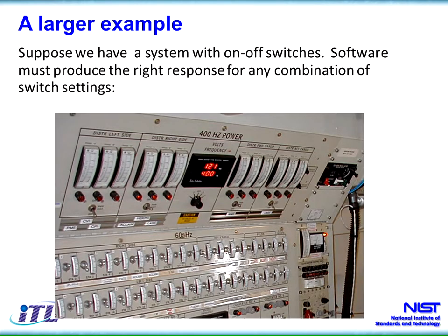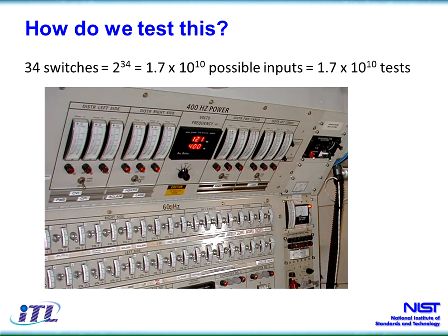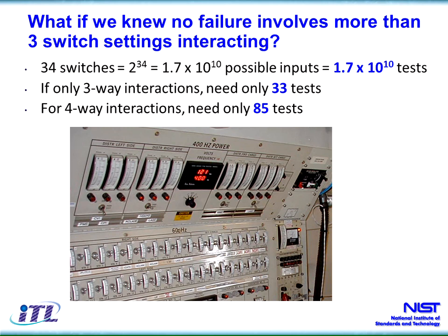Here's a bigger example — 34 switches. Say we have a panel with software that interprets switch combinations and behaves differently depending on what combination is set. That's two to the 34th, or about 17 billion combinations — we can't possibly afford 17 billion tests. Using the interaction rule, we can test three-way, four-way, five-way, or six-way combinations. For this set, we need only 33 tests for all three-way combinations, and 85 for four-way. The five- and six-way are on the order of a few hundred. The key point is we can use a very small number of tests to get very strong testing.